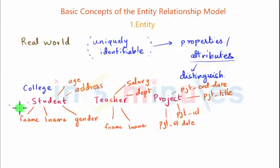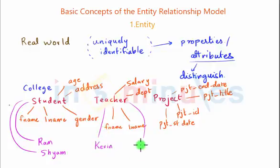If in the college we have a student called Ram and another student called Sham, these are entities because they are uniquely identifiable or they can be distinguished. Let us also consider two teachers, say Kevin and Mansi.